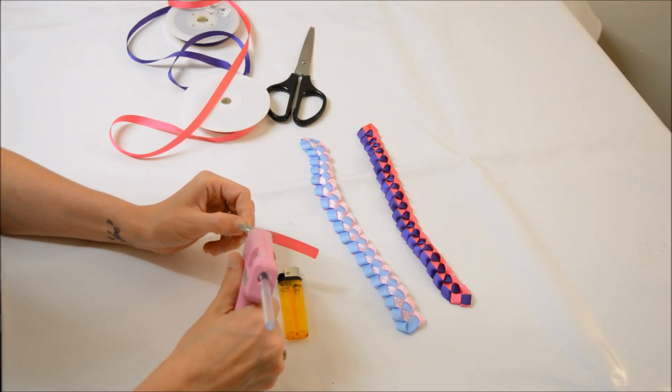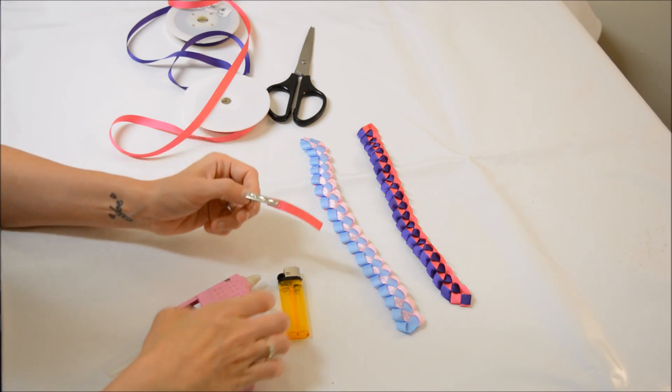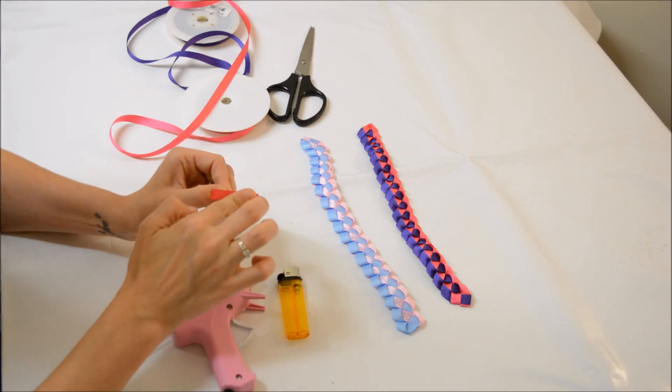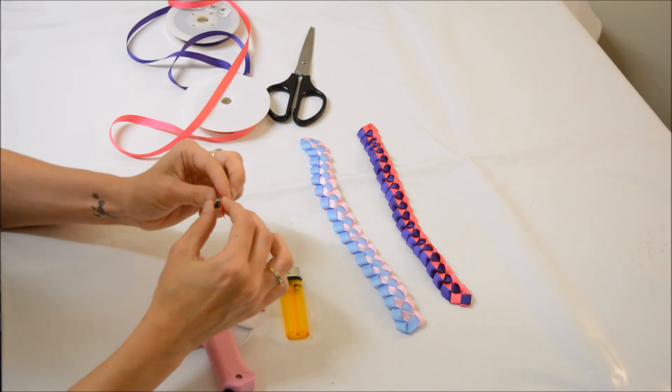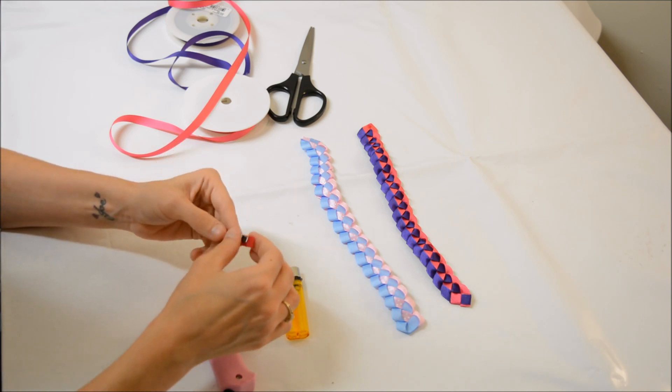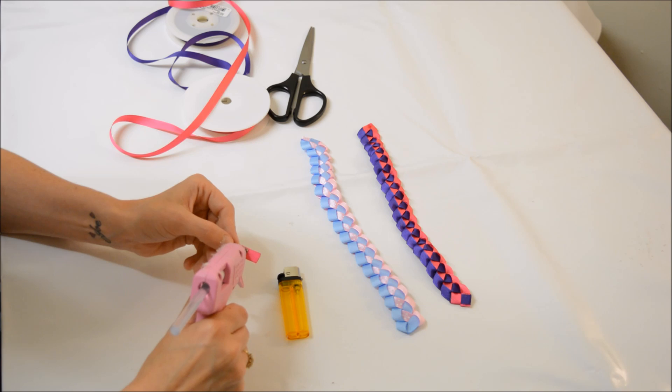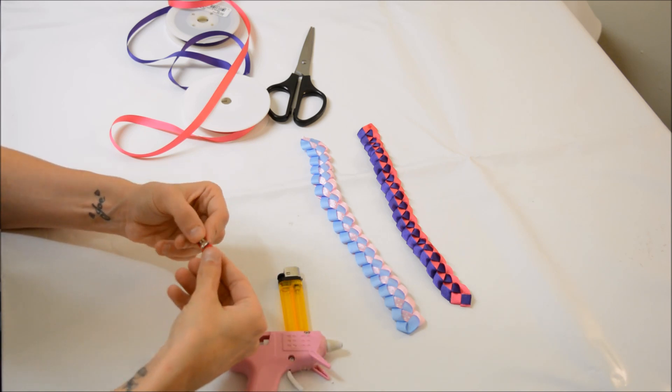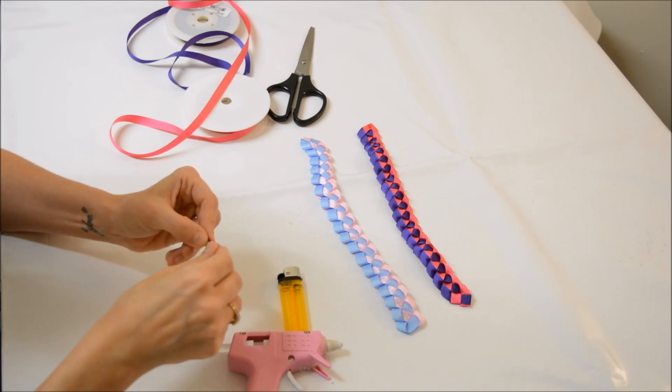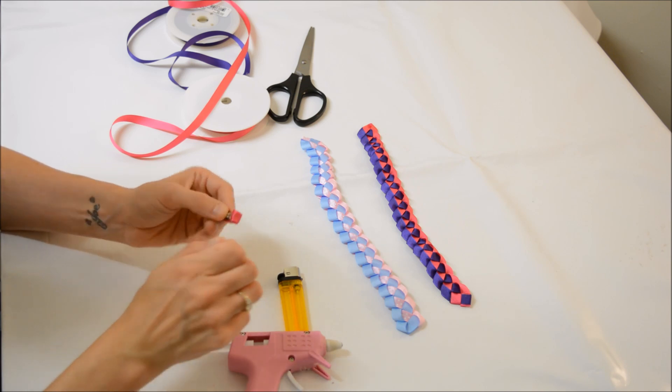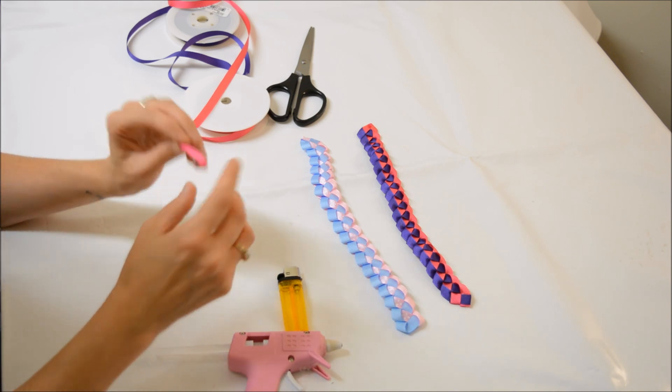Apply more glue to the top of the clip, push your ribbon down, and finally apply glue to the back. And there's your finished clip.